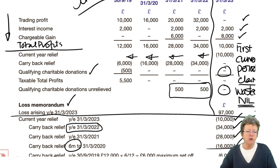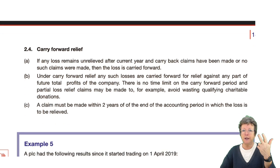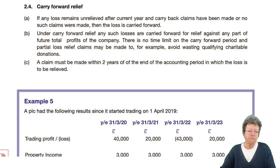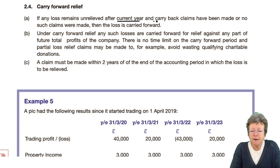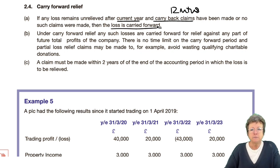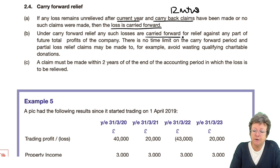Now, what happens then? We've done current year, we've done carry-back, we've done carry-back when you cease to trade — that 36 months. What happens if you carry forward? If any loss remains unrelieved after the current year or a carry-back claim — which is 12 months — then it is carried forward. Under carry forward, any losses are carried forward to relieve against any part of future total profits.